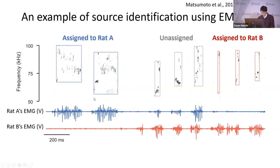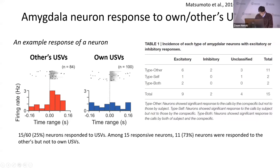This is an example of a sound spectrogram and EMG trace of two animals simultaneously decoded from interacting males. The first two calls were assigned to the first rat because only that rat's EMG was active. The following three vocalizations were not assigned because EMG was active in both animals. So the last three were assigned to the other animal. In this way, we assigned the vocalizations, and based on the assignment, we analyzed the response of amygdala neurons to own and others' USVs.